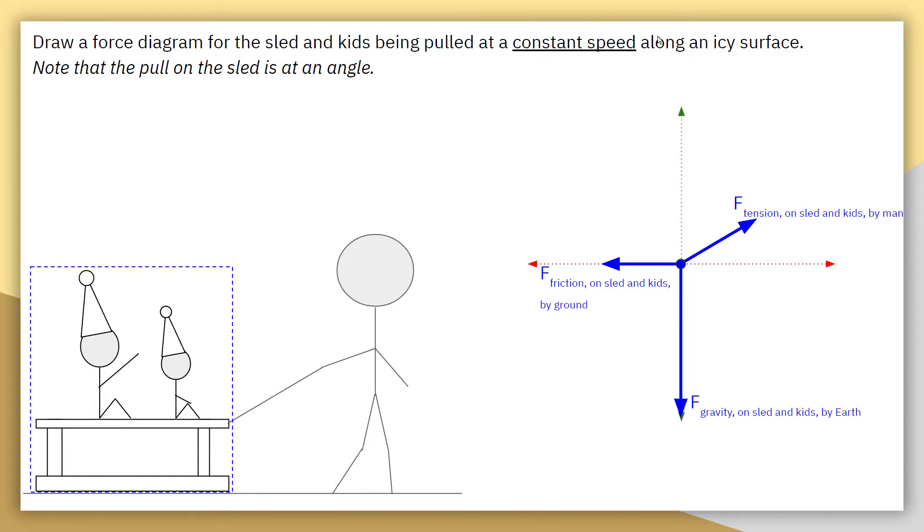But, I also know that I have a constant speed. This means that overall, my acceleration should be zero. That means that my forces, horizontally and vertically, should be balanced.